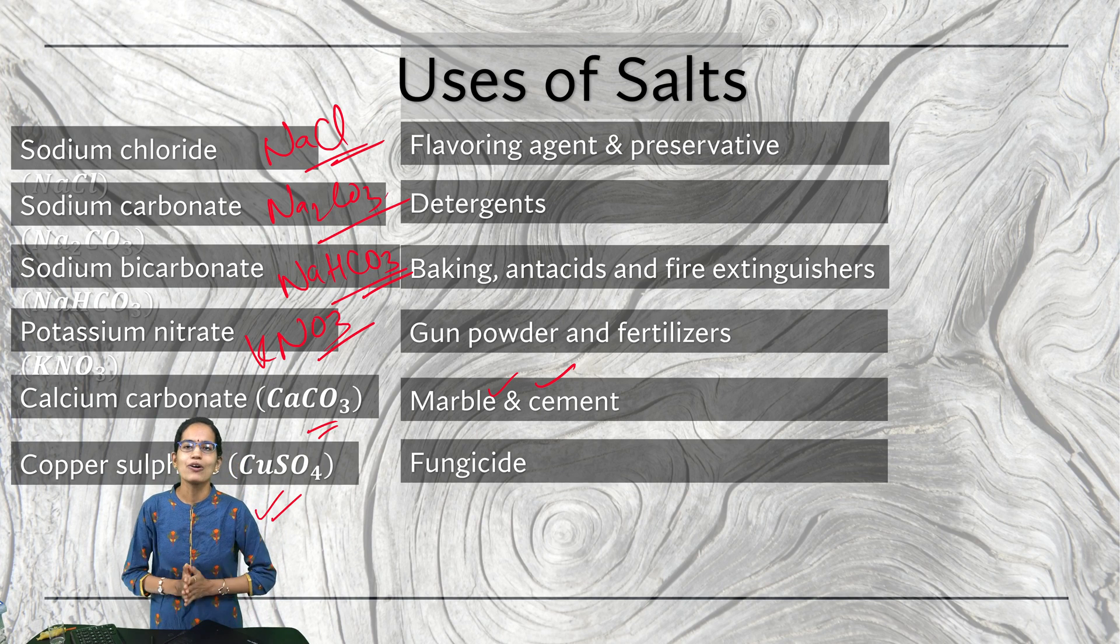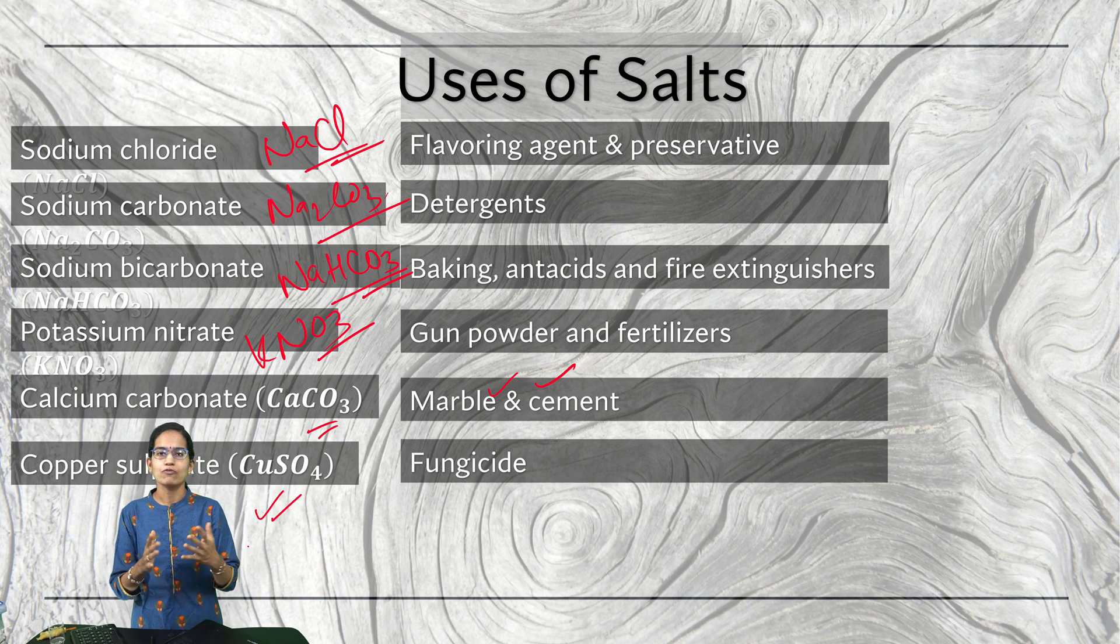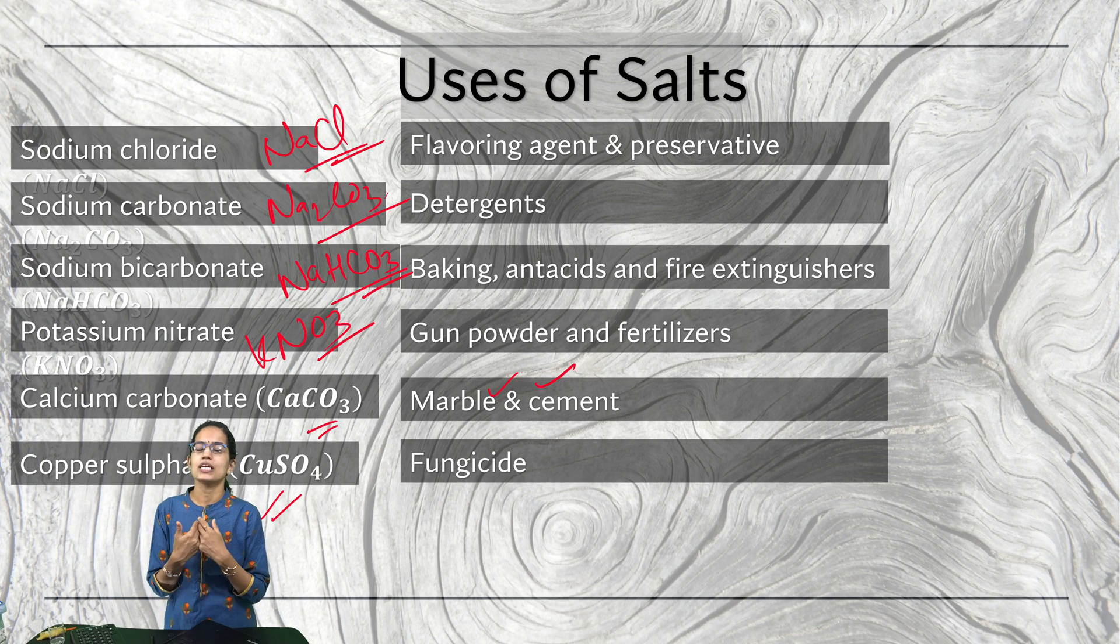So this was about understanding how with the acid-base reaction, salts are formed and water as a byproduct of it. The salts can again be of three types: they can be acidic salts, basic salts, or neutral salts, and where all these salts are utilized.